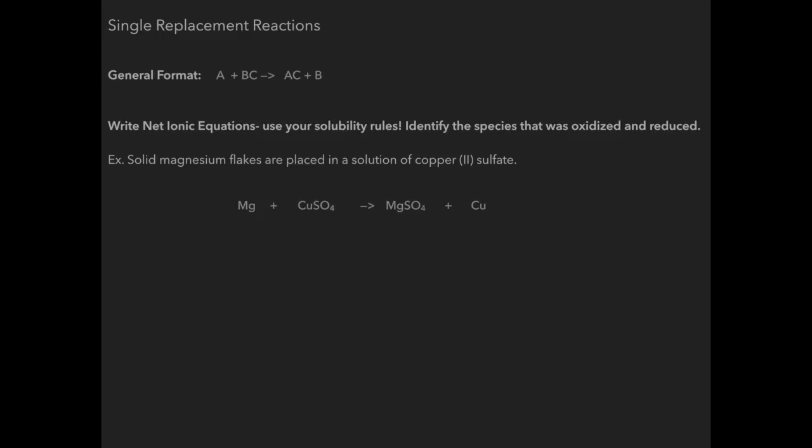So now I need to write the full ionic reaction for this. Well I start off I have magnesium, copper sulfate is soluble so I'm going to have copper ions and sulfate ions. Magnesium sulfate is also soluble so I'm going to have magnesium ions and sulfate ions and then I have copper. I need to eliminate the spectator ions so I'm going to eliminate sulfate that's the only thing that is a spectator because notice magnesium on the reactant side is an atom while it's an ion on the product side.